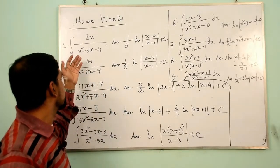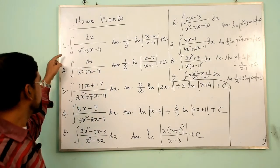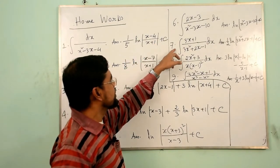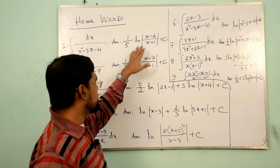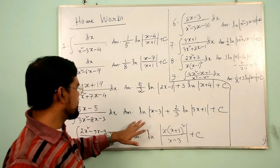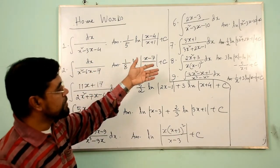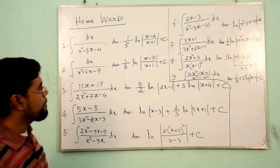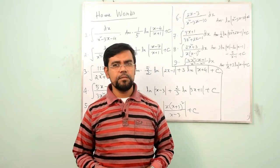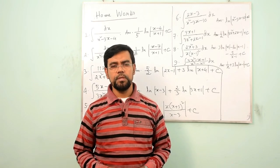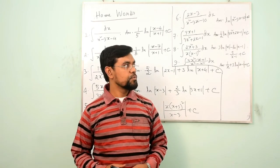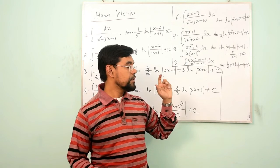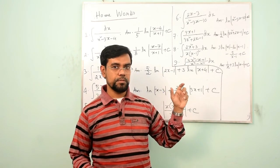These are the homework problems, numbered 1 through 9. The answers are also provided so you can check whether you find the correct answer. That is the end of Lecture 4, where we used the partial fraction technique to integrate proper rational functions.